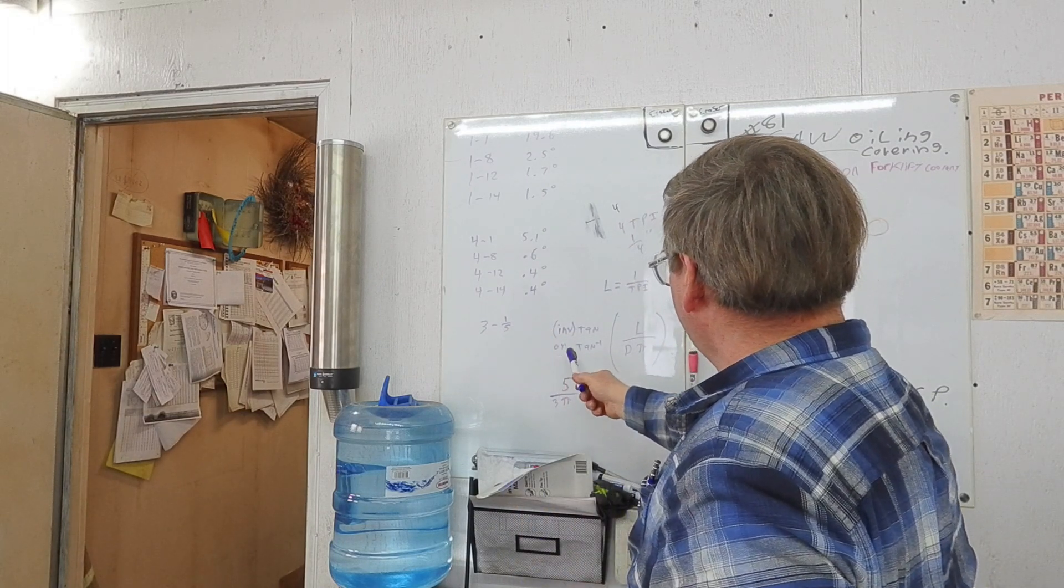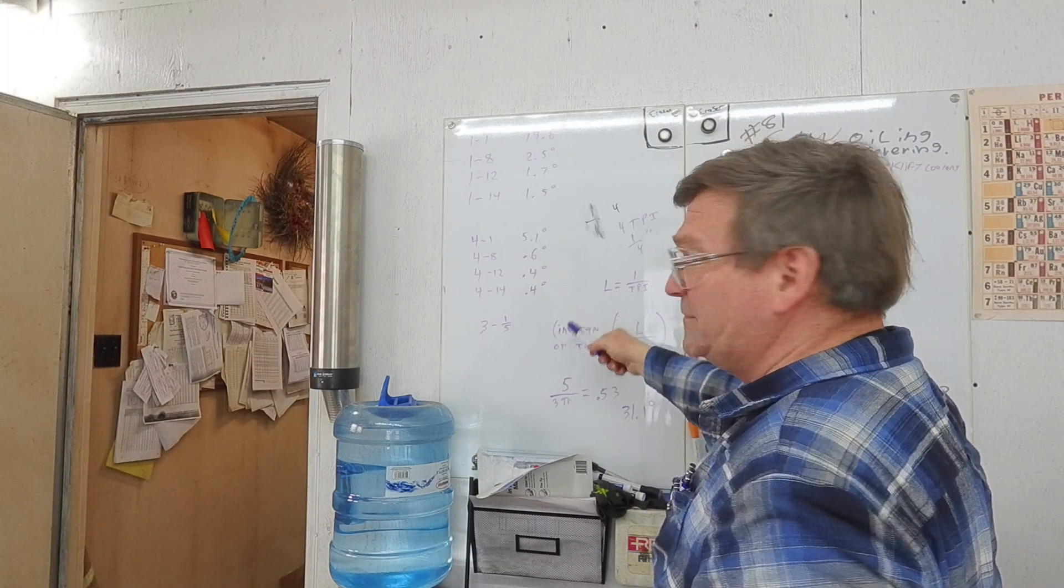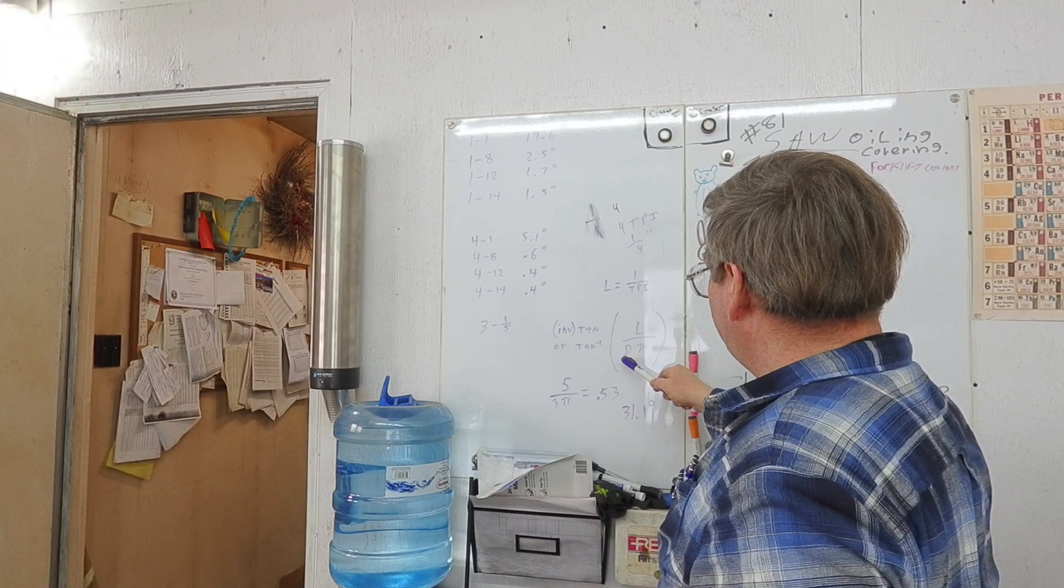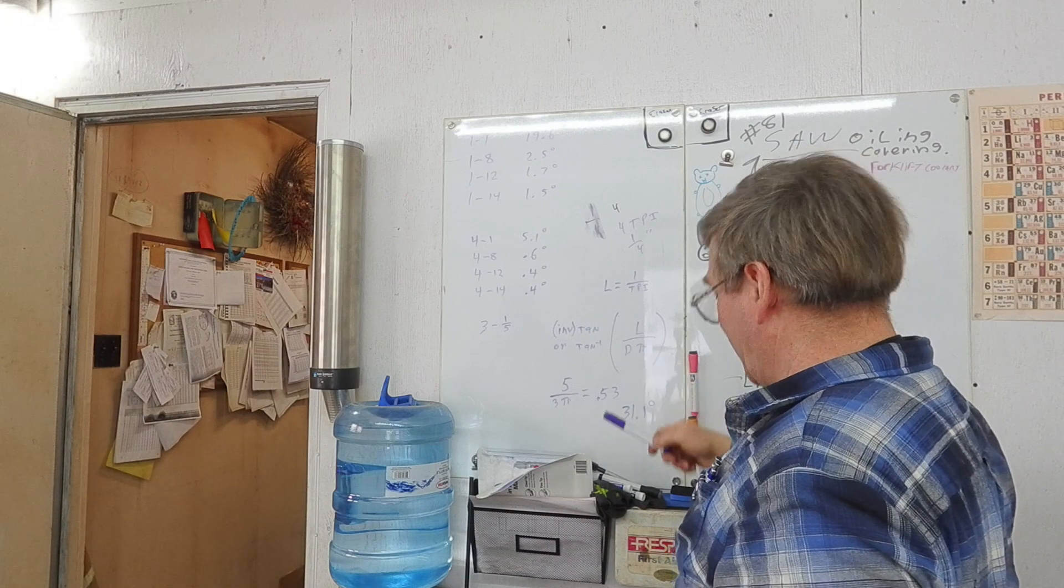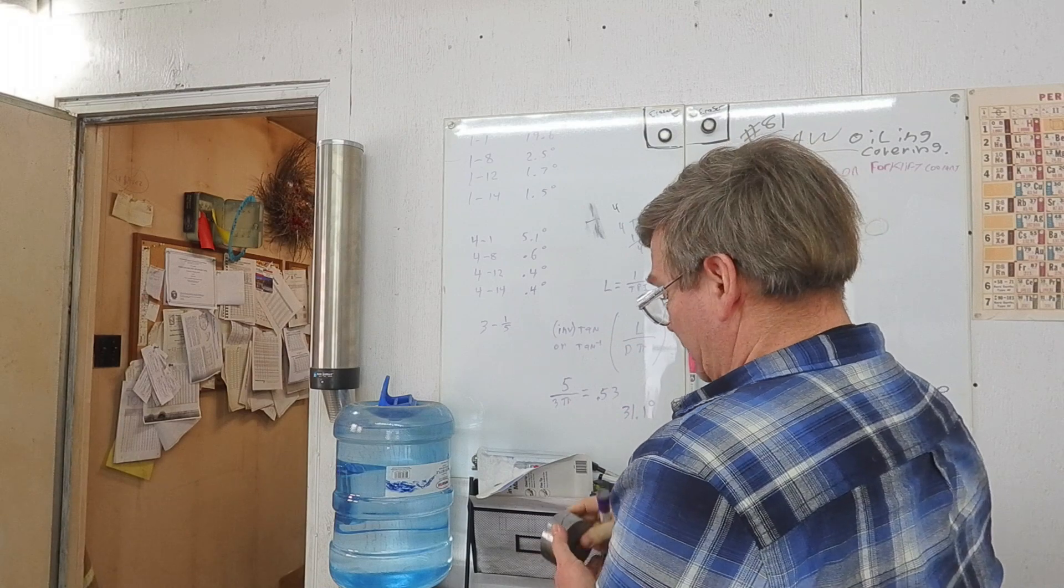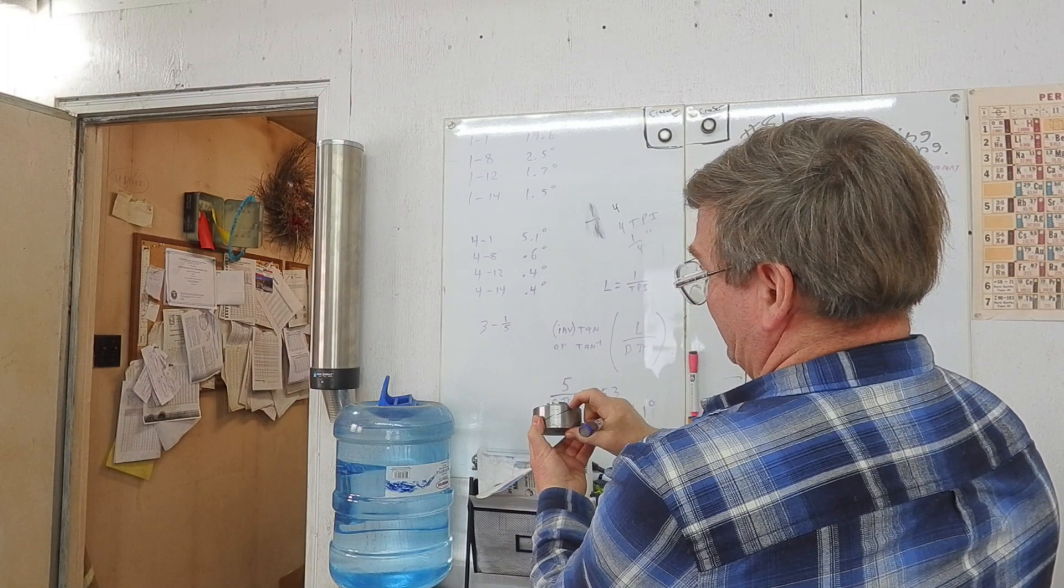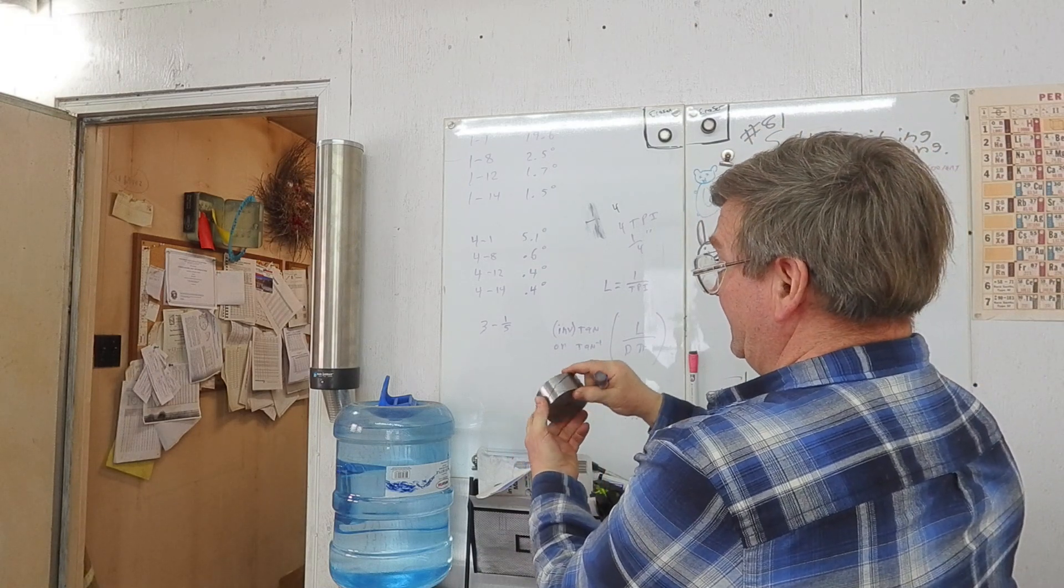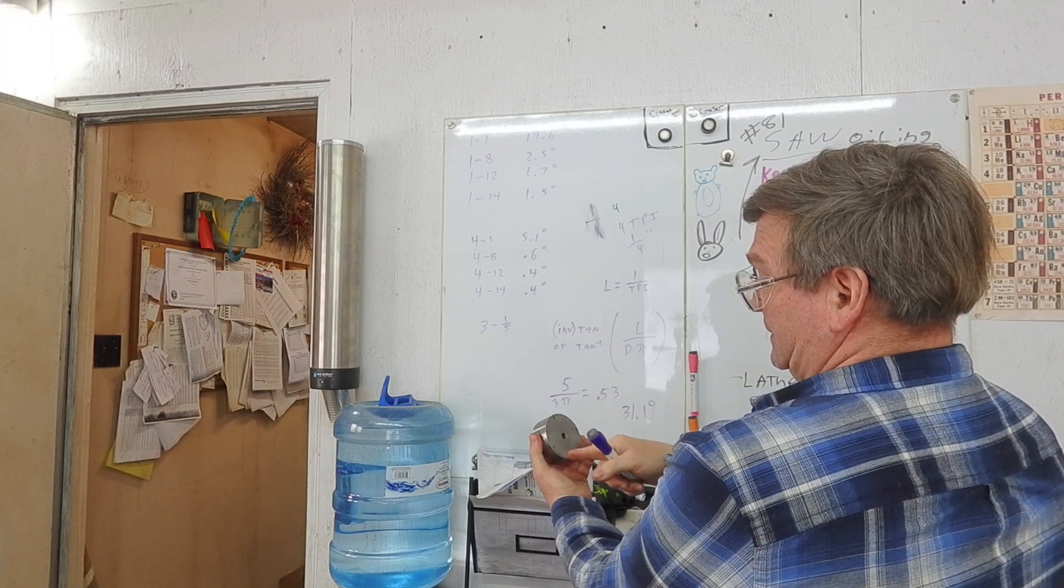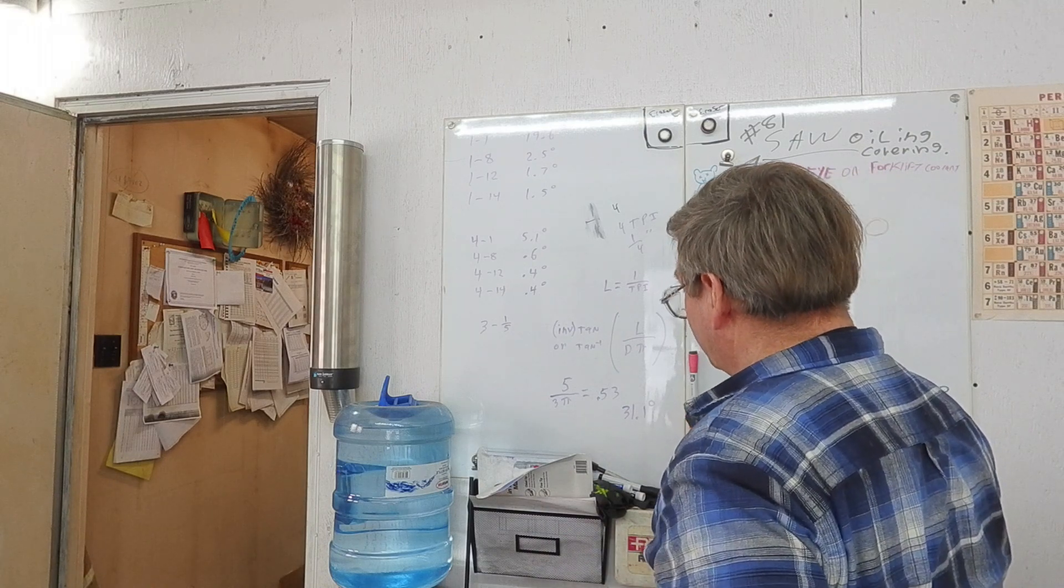And here is the formula. You either use your inverse tangent or tangent to the minus one, something like that you'll have on your scientific calculator, and that's your lead divided by your diameter times pi, so that all you've really got, this is just a tangent function. We are looking at the side opposite on this is the movement, the amount of lead, and then our side adjacent to our angle is the distance around, which is your diameter times pi. It's relatively simple.